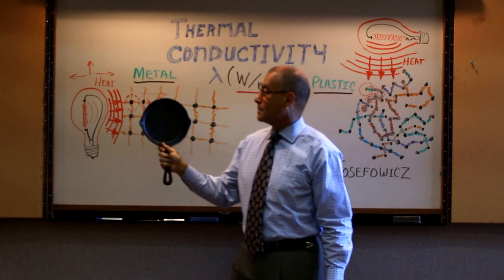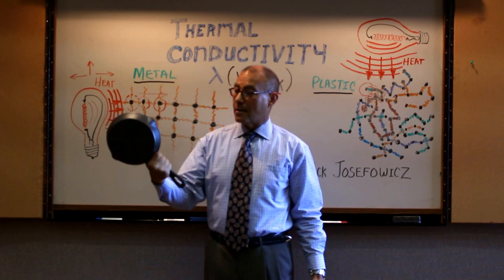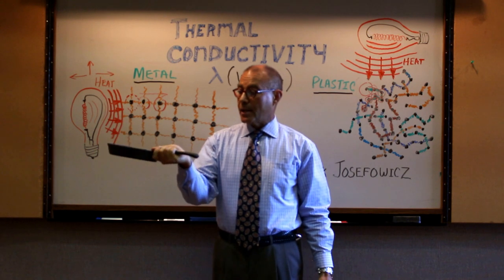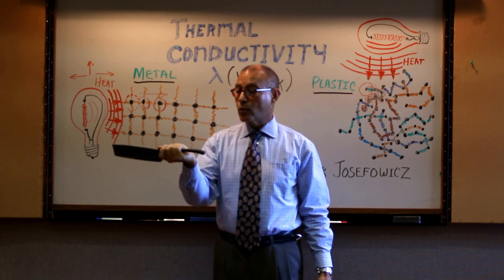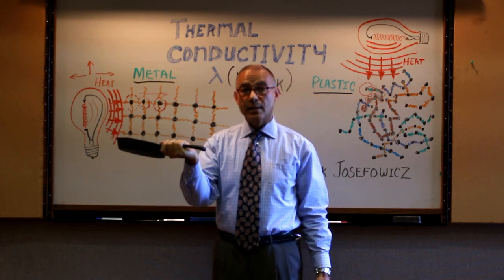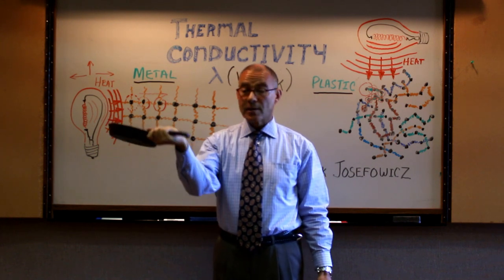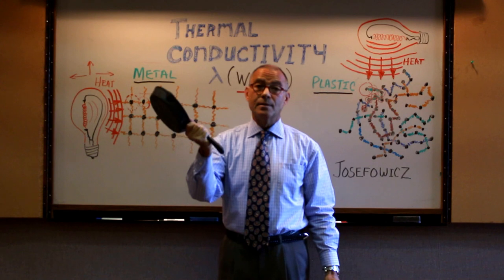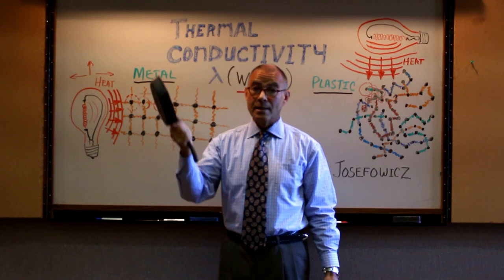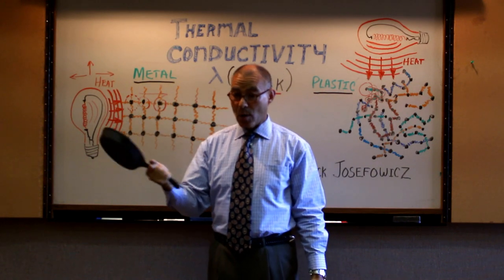Basically, this is a metal, and the burner would heat up the bottom of the pan, and it would very efficiently and very quickly, because it's high thermal conductivity, move to the handle, and so you couldn't pick it up this way. You'd need an insulator to hold it, a pot holder.